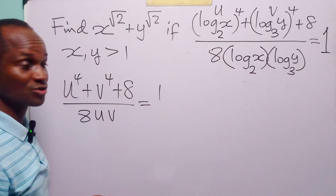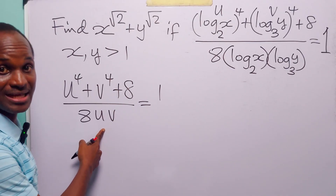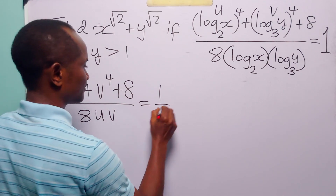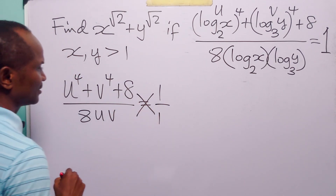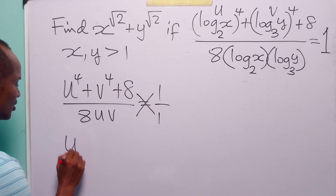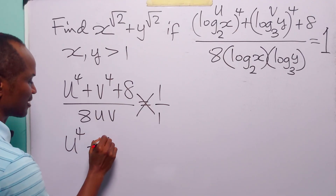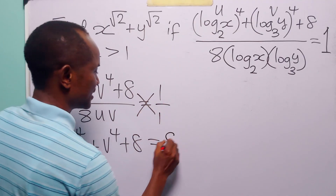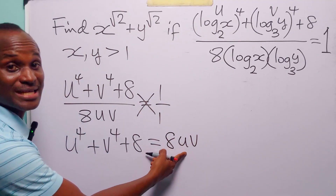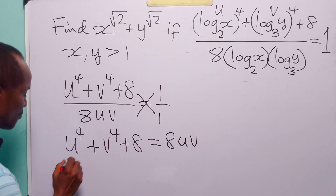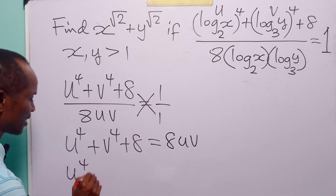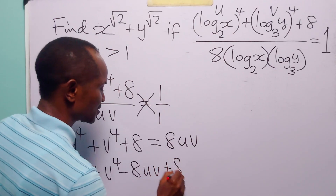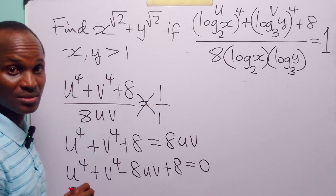The next thing we are going to do is get rid of the fraction on the left-hand side by cross-multiplying. When we do that, we have u to the power of 4 plus v to the power of 4 plus 8 is equal to 8uv. Bringing this term over to the left-hand side, we have u to the power of 4 plus v to the power of 4 minus 8uv plus 8 is equal to 0.